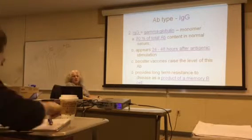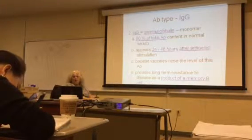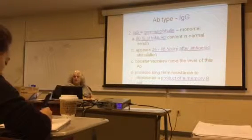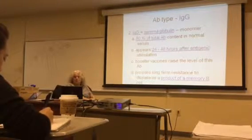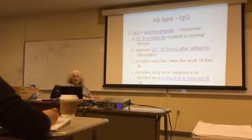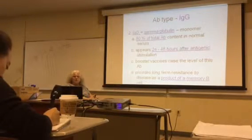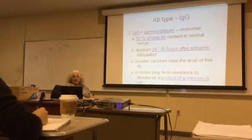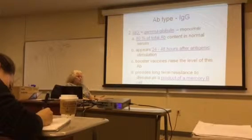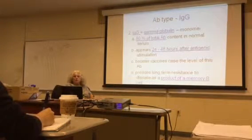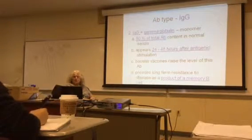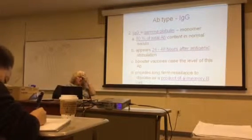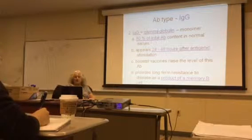IgG stands for gamma globulin. It is also a monomer and accounts for 80 percent of the antibodies in the serum. These appear between 24 and 48 hours after antigenic stimulation. This antibody — raised after a booster shot from a vaccine — provides long-term resistance to disease as a product of the memory B cells.